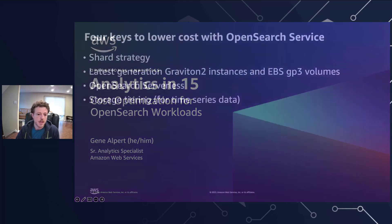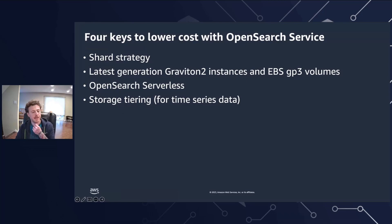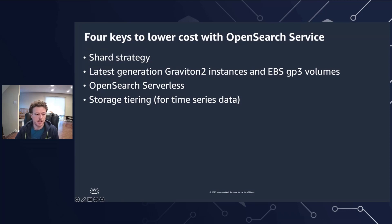There are four keys to lower costs that we will discuss today. They are shard strategy, the latest generation of Graviton2 instances and EBS GP3 volumes, OpenSearch Serverless, and storage tiering for time series data.